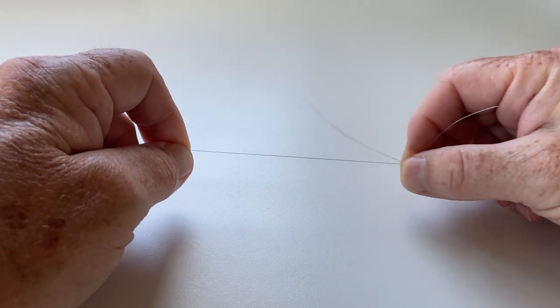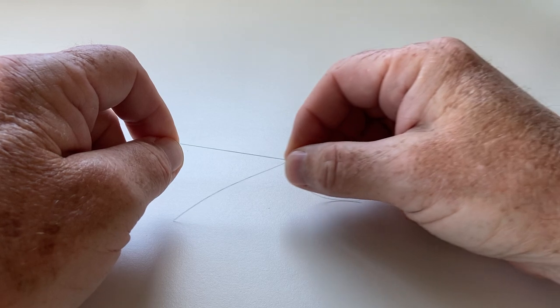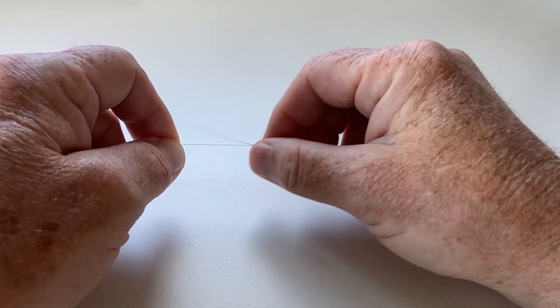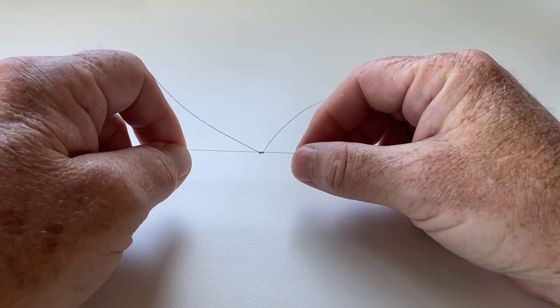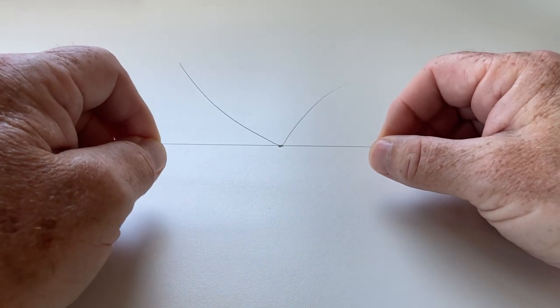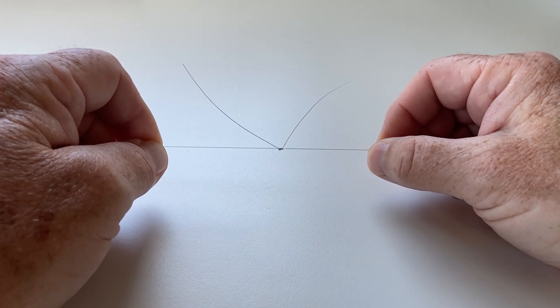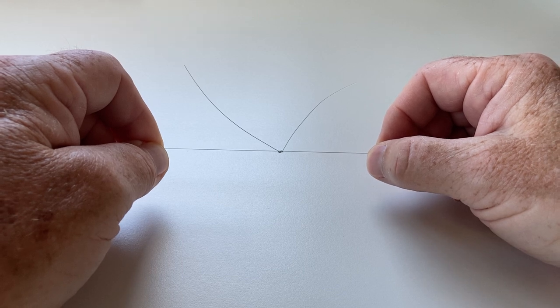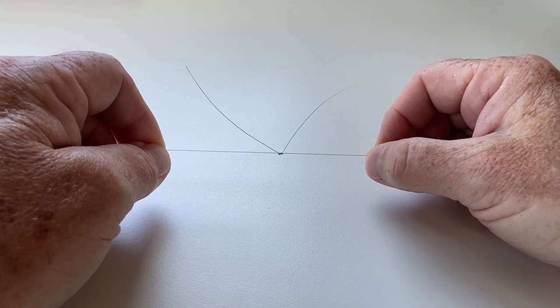As you can see it will slide easily but not too easily and you can always tighten up a little if you need to. If you over tighten this knot it will crimp the line and you don't want that. So just go very carefully as you pull the knot together.